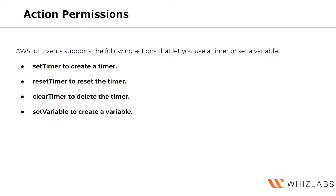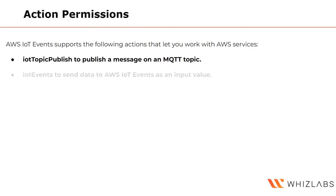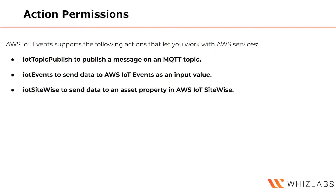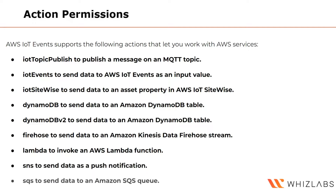Other action permissions let you work with AWS services. You can use IoT Topic Publish to publish a message on an MQTT topic, IoT Events to send data as an input value, IoT SiteWise to send data to an asset property, DynamoDB to store data in a table, Firehose to send data to an Amazon Kinesis Data Firehose stream, Lambda to invoke a function that can talk to something outside AWS to trigger an action, and SNS and SQS for notifications and queuing.